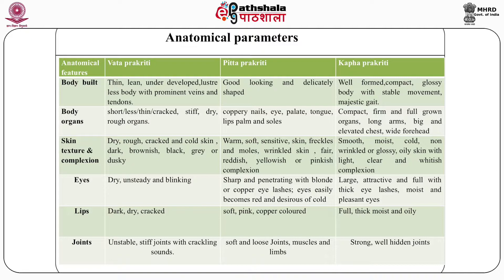Regarding lips: pitta individuals have soft, pink and copper colored lips; kapha individuals have full, thick, moist and oily lips. Regarding teeth: vata individuals have small, crooked, easily cracked teeth; pitta Prakriti have moderate-sized, dry and yellowish teeth; kapha individuals have strong, large and wide teeth.